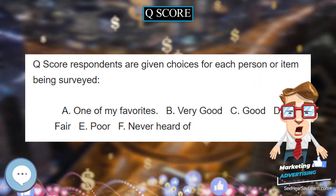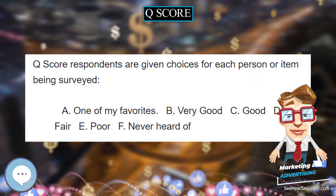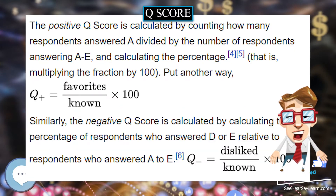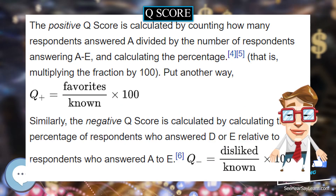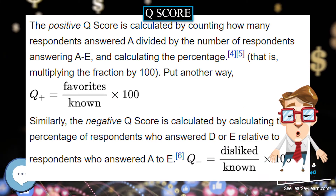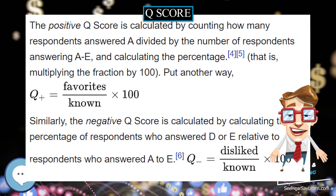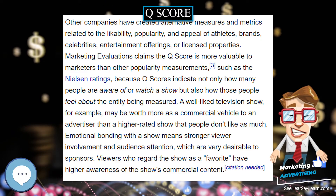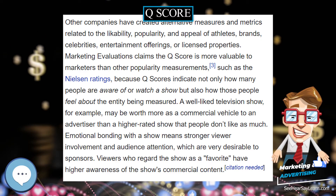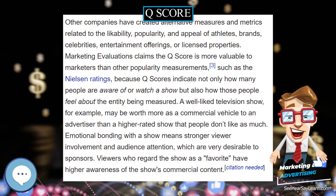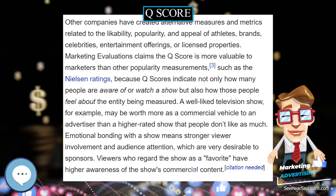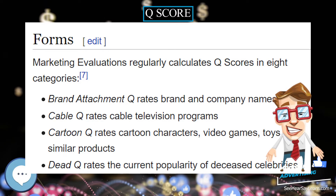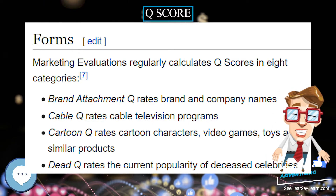The higher the Q-score, the more highly regarded the item or person is among those who are aware of the subject. Q-scores and other variants are primarily used by the advertising, marketing, media, and public relations industries.